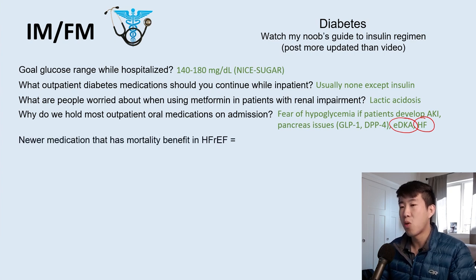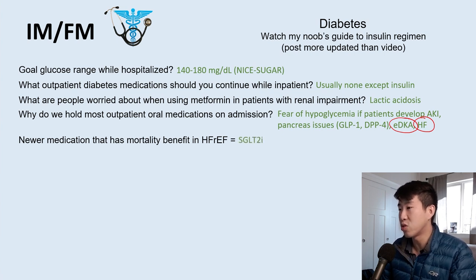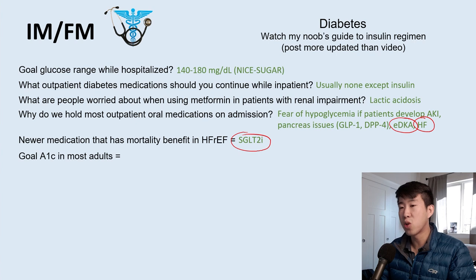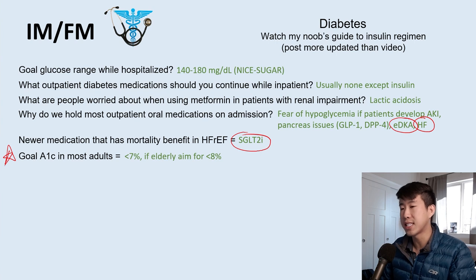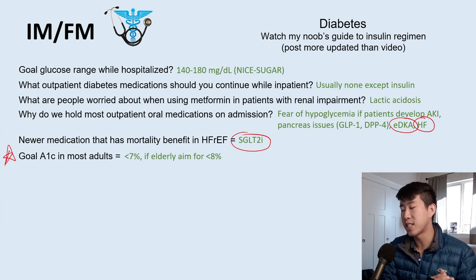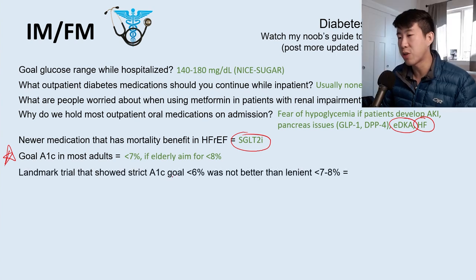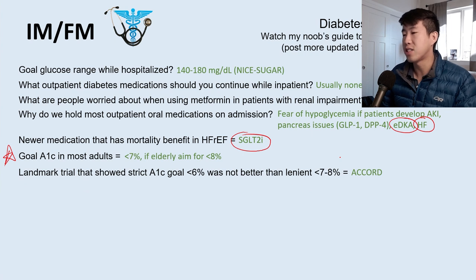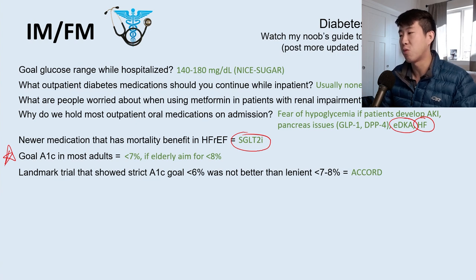SGLT-2 inhibitors have mortality benefit in heart failure with reduced EF and are gaining favor in diabetic patients. Goal A1c in most adults is less than 7%; for elderly patients, aim for less than 8%. Diabetes is officially diagnosed with A1c greater than 6.5%, but we don't aim that low because the ACCORD trial showed strict A1c goals less than 6% were not better than lenient goals of 7–8% and increased hypoglycemic events.